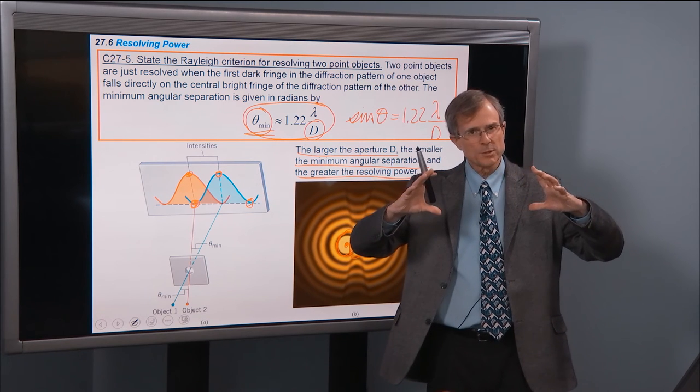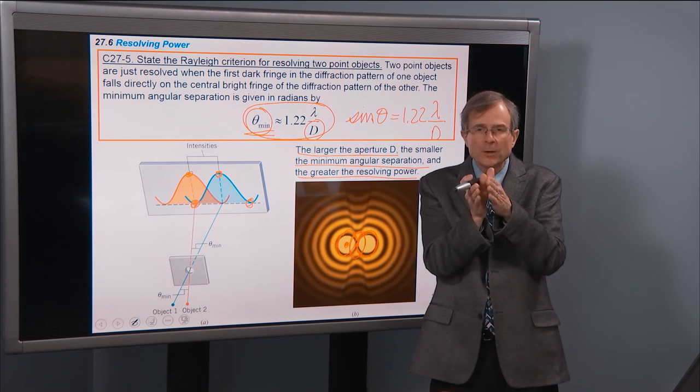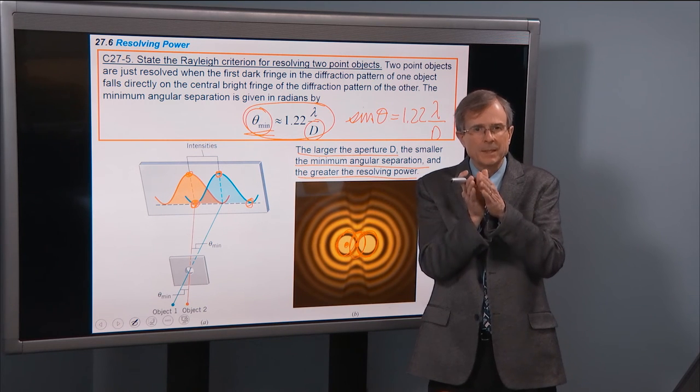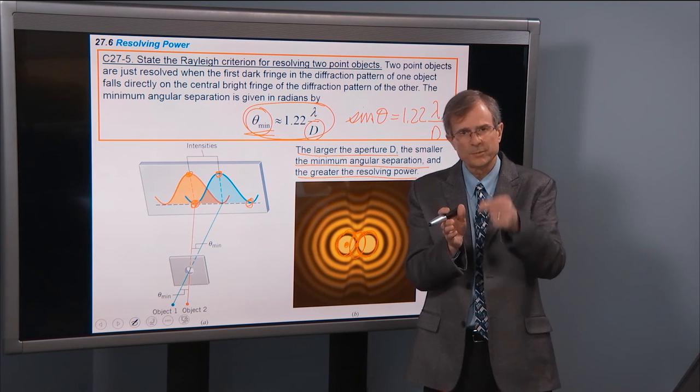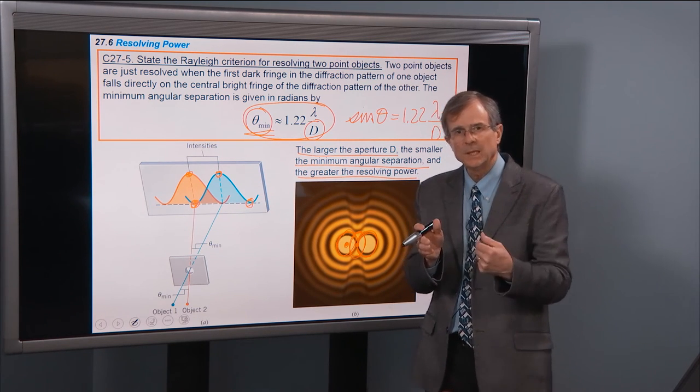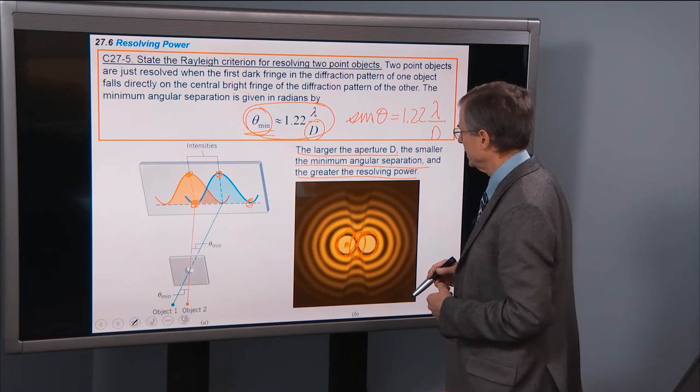Same with the telescope. The bigger the aperture, the smaller, the finer resolution that you'll get in the image. And this has nothing to do with light gathering capacity. It has everything to do with diffraction, which is the key to understanding resolving power of microscopes and telescopes.